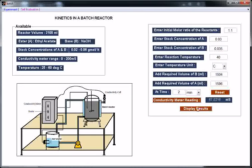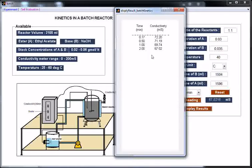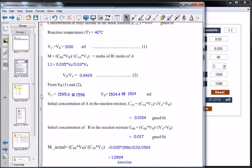To see all the readings, just click the button display result. This displays at different times what are the conductivity meter readings. From these readings, users are supposed to calculate concentration.